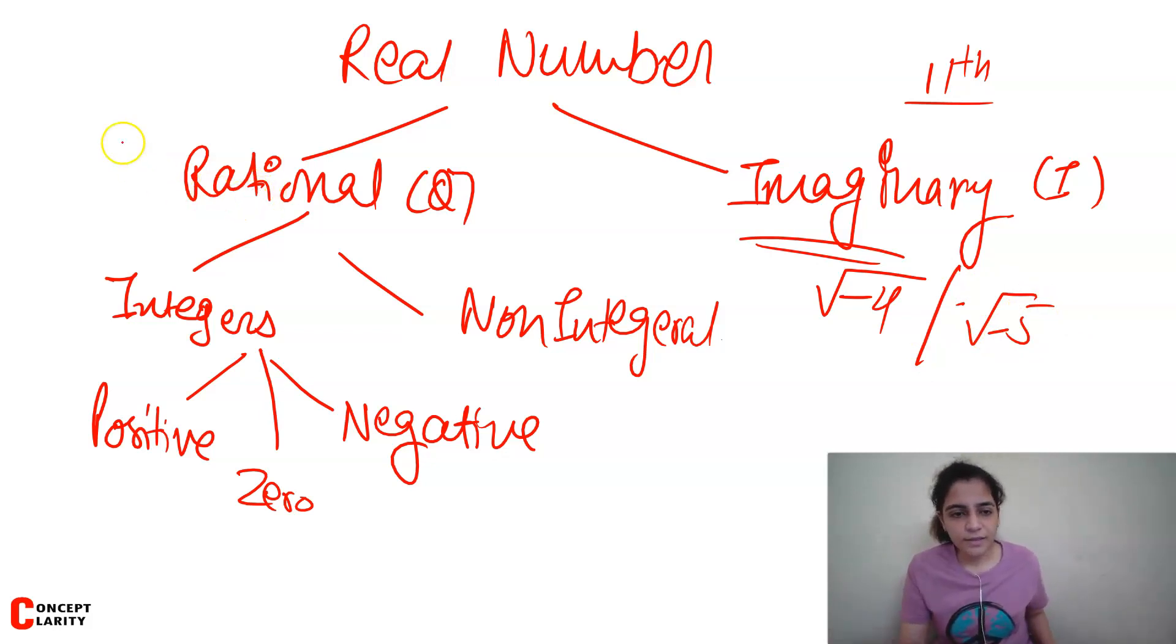Rational numbers we do not know, could be minus infinity to infinity. So we take up any number. Integers do not have the fractional part. So it could be 1, minus 1, 3, 4 - these would be integers.